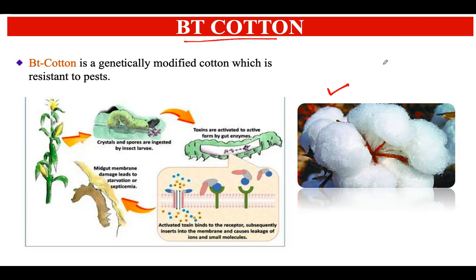The bollworm insect eats up the cotton plant, infects it, and ultimately leads to the destruction of the crop. Scientists were very concerned about this problem, and hence they did some research and came to the invention of one very important cotton variety called Bt cotton, which is a genetically engineered crop.